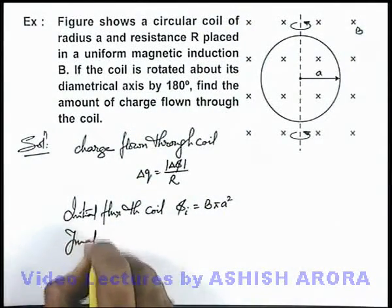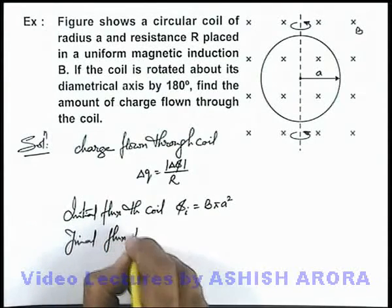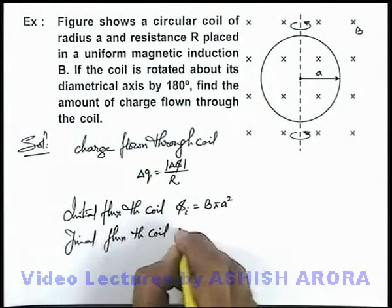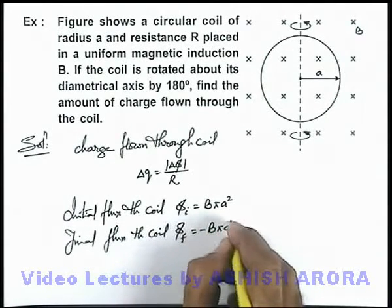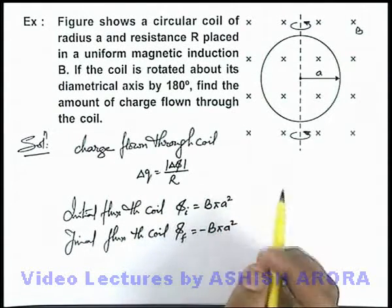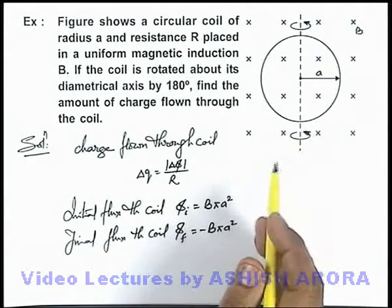We can write the final flux through the coil as -Bπa², because now the direction of the area vector and magnetic induction are opposite.